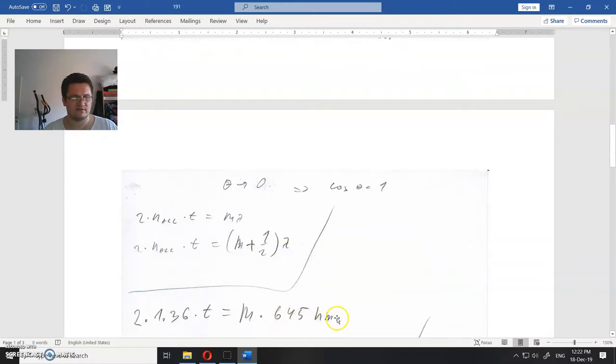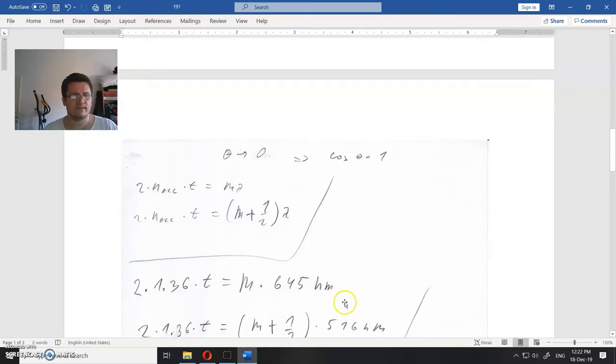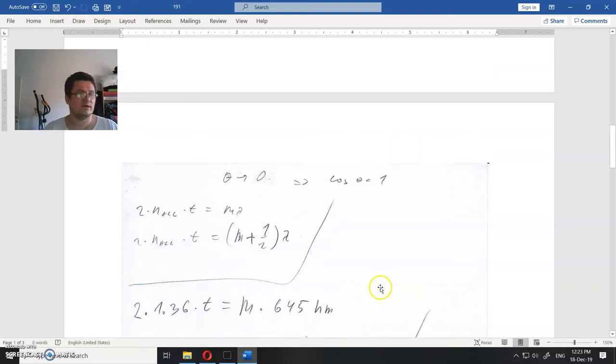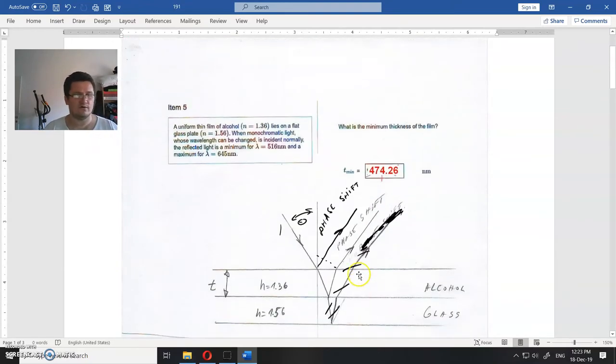For the maximum it's 645 nanometers, and for the minimum it's 560 nanometers. You now have two equations with two unknowns, T and M, and you could finish this yourself.